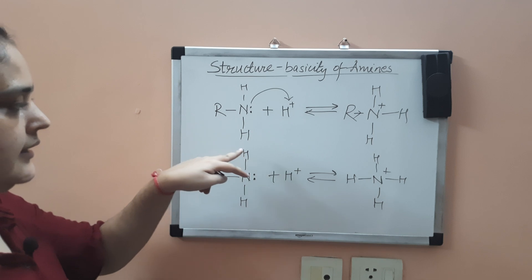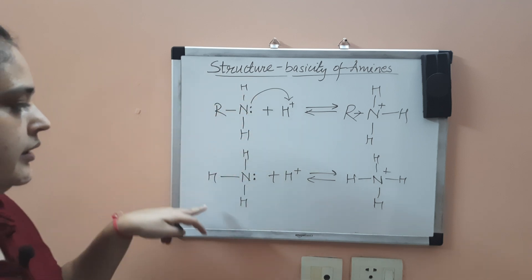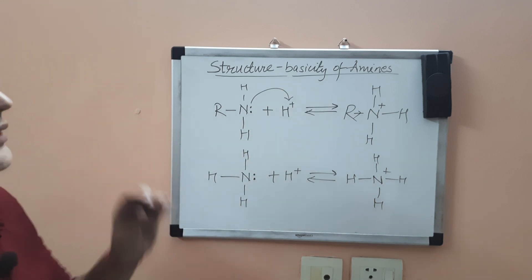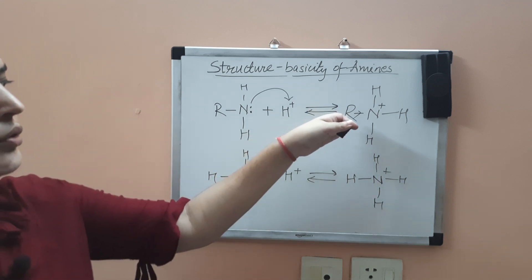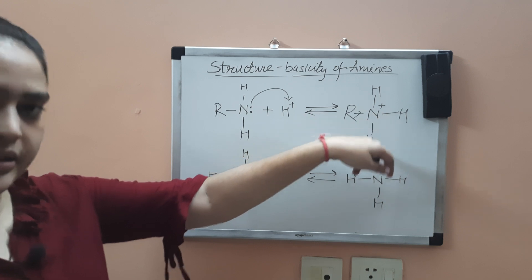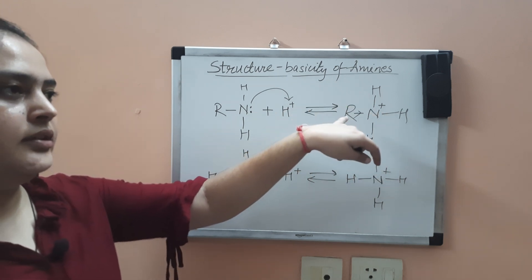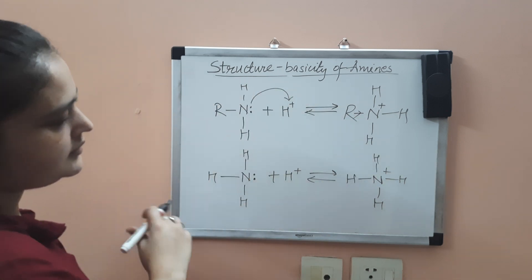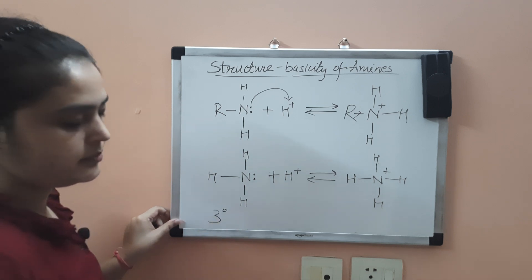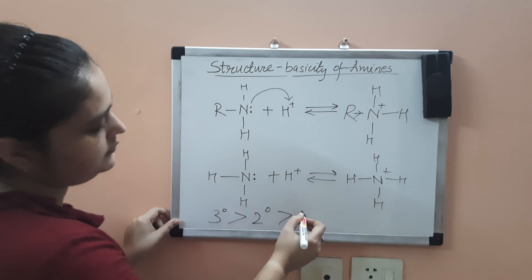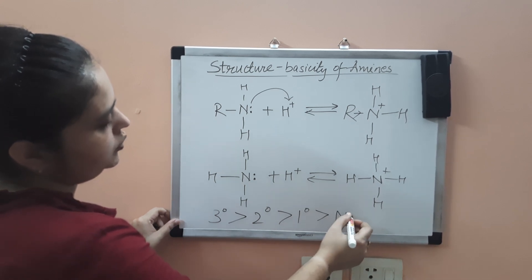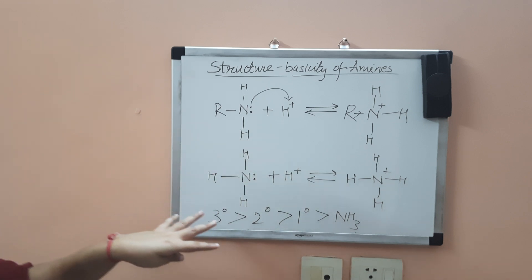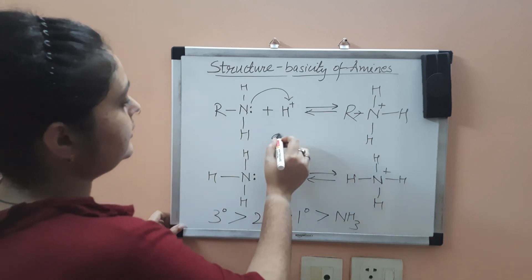Therefore, alkane amine is more basic in nature than ammonia due to the stability of the cation formed. The more alkyl groups present, the more basic the amine — so a secondary amine is more basic than a primary amine, and a tertiary amine is more basic than a secondary amine. The order of basicity in the gaseous phase is: tertiary > secondary > primary amines > ammonia. This is the case in the gaseous phase, where only the inductive effect operates.